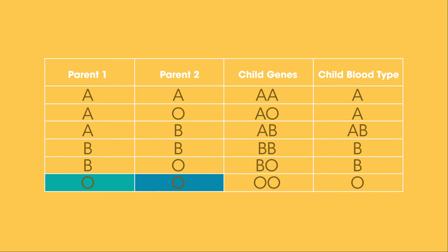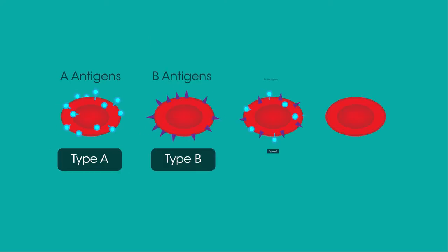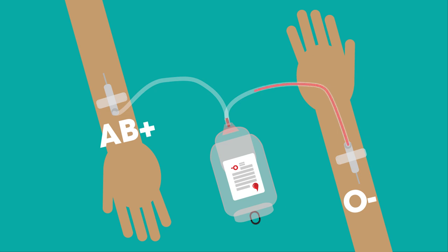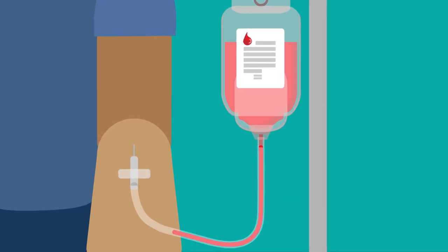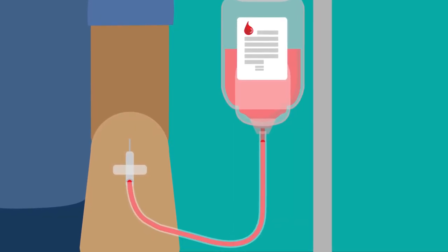To have blood group O, you need your genes to be OO, and so both of your parents must also be O's. This is because the O allele is recessive. Despite being recessive, blood group O is the most common around the world. In summary, our blood group is determined by the presence or absence of A and B antigens on our red blood cells, which are inherited from our parents. The blood group you are also determines who you can receive blood donations from and who you can donate blood to. And thankfully, now that doctors understand this, patients can safely receive life-saving blood transfusions.